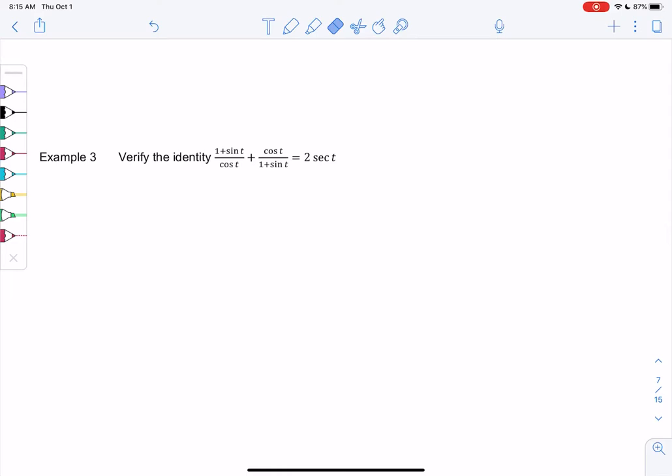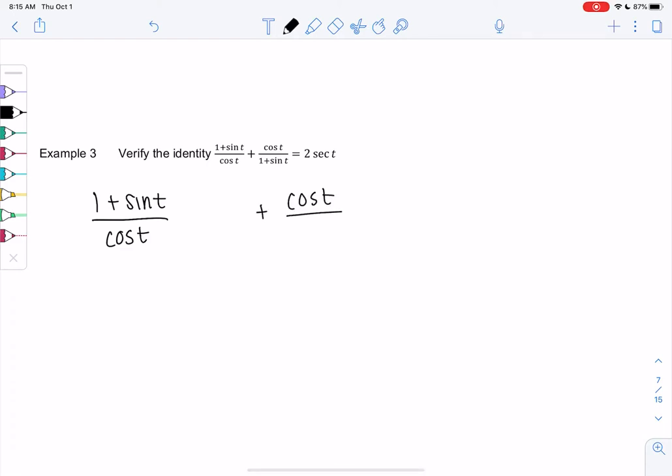So this is an identity, true for any x. Again, I'm going to start with the left side because it looks a lot messier than the right side. I notice we have fractions, so I'll probably do LCD. LCD would just be the two denominators, cosine times one plus sine t.